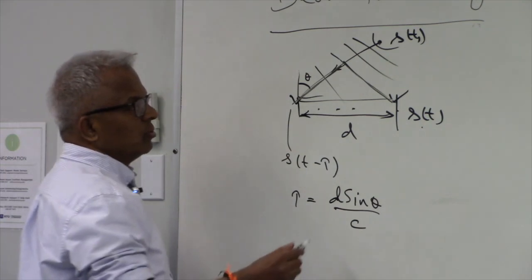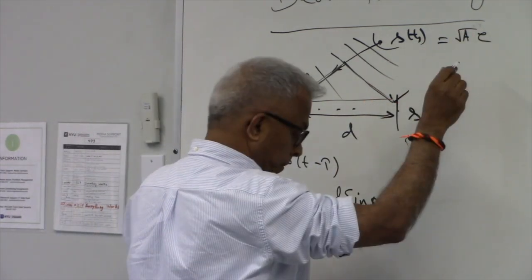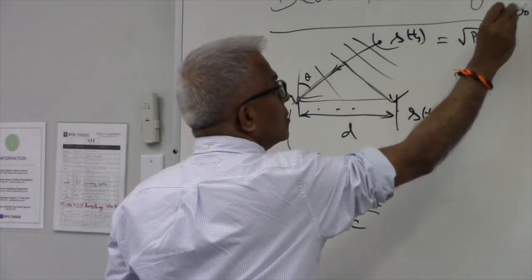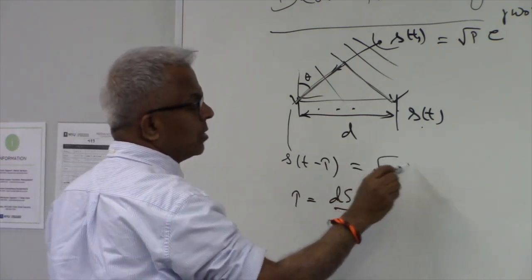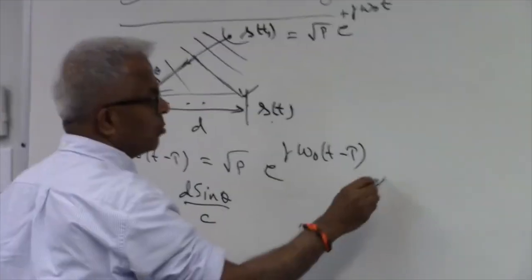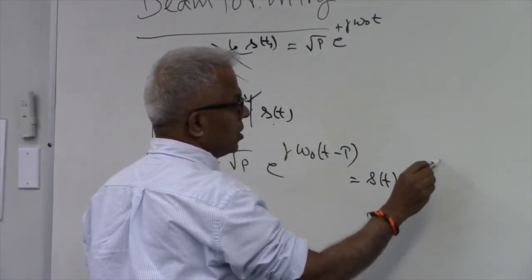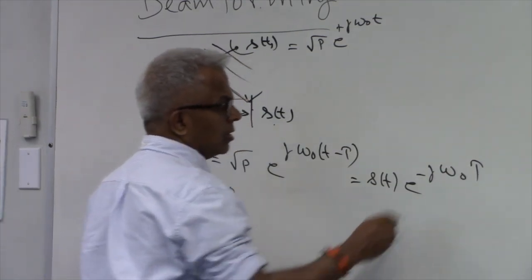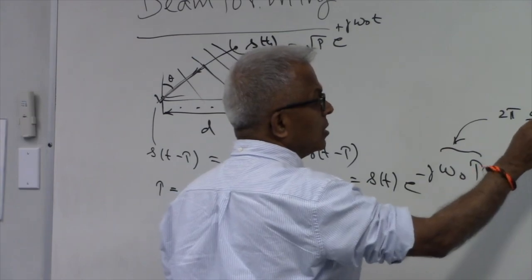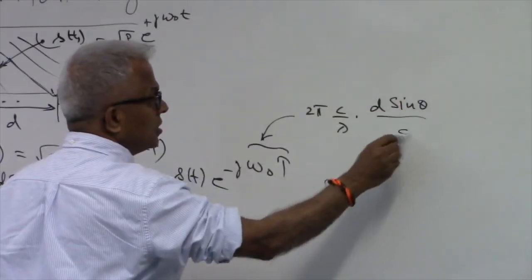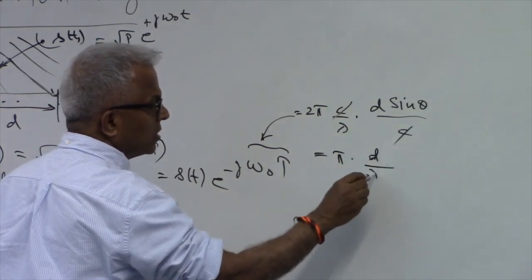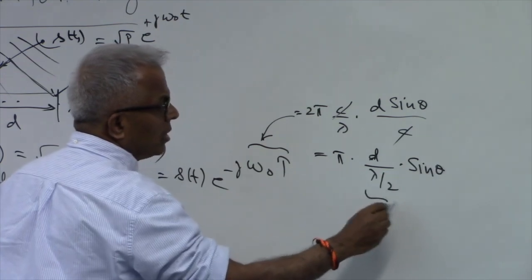Now, if I assume this is a narrowband source with some amplitude or power P, then S(T − τ) is going to be S(T) · e^(−jω₀τ). Omega naught tau: omega naught is 2πF₀, F₀ is C over lambda, and tau is D sine theta over C, so C cancels.